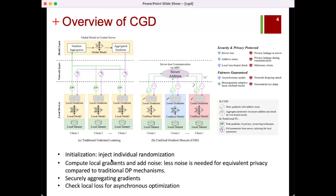Participants first initiate their own confined models, allowing them to inject individual randomization. They then compute local gradients and add noise. This step aims to compare privacy between CGD and traditional DP mechanisms.